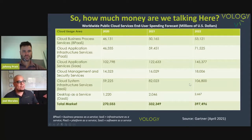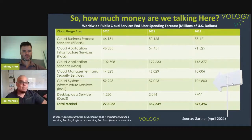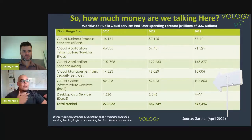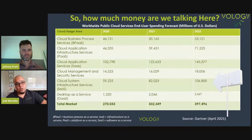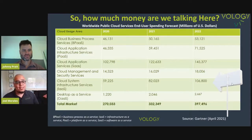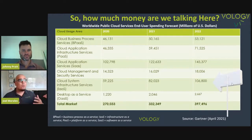Looking at the infrastructure as a service area — that's the area of focus. Last year in 2020, businesses spent just about $60 billion in infrastructure as a service. Gartner forecasts something about $82 billion will be spent this year, and something close to $100 billion will be spent in 2022 on infrastructure as a service. This is not an industry that's going away — it's growing something about 25 percent per year.